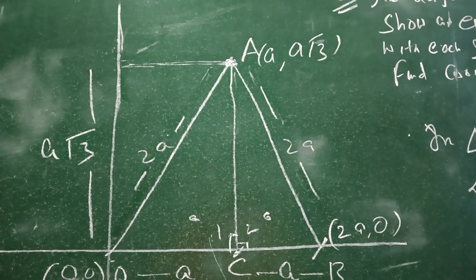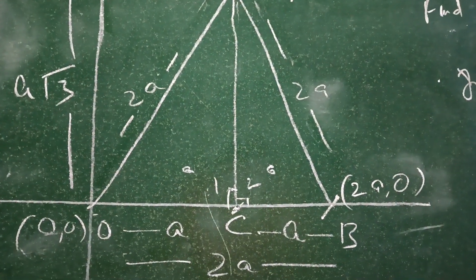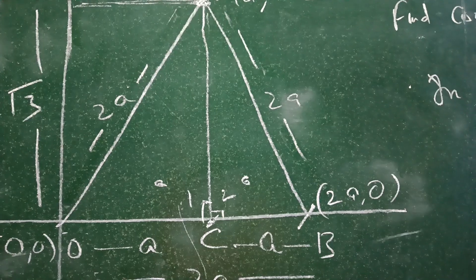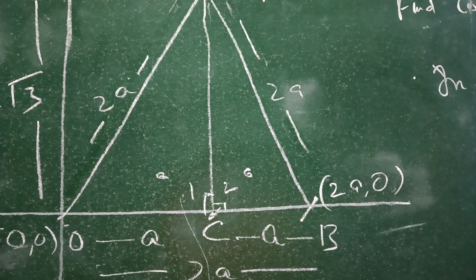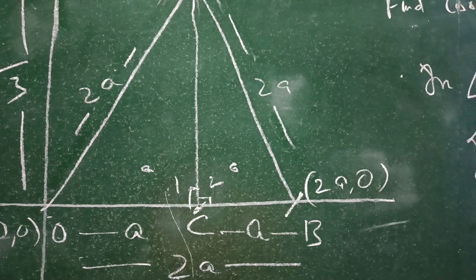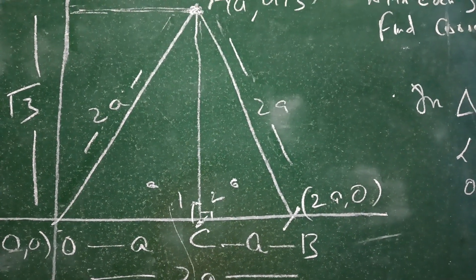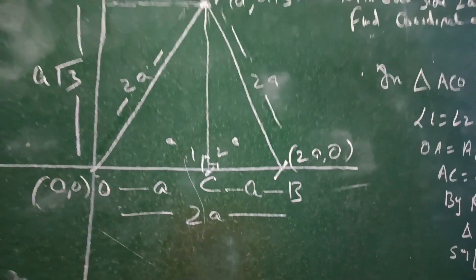So our vertex A, its x-coordinate and y-coordinate, will be (a, a√3). Our origin O has coordinates (0,0), and B, lying on the x-axis, will have y value 0, so the coordinates will be (2a, 0).